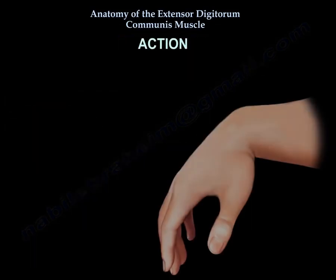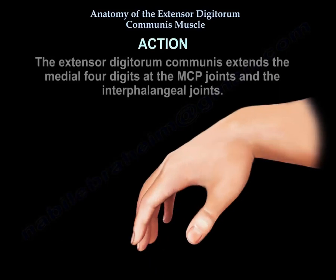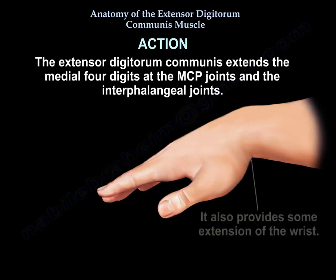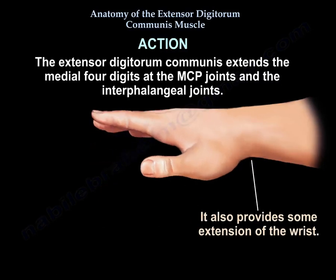The Extensor Digitorum Communis extends the medial four digits at the MCP joints and interphalangeal joints. It also provides some extension of the wrist.